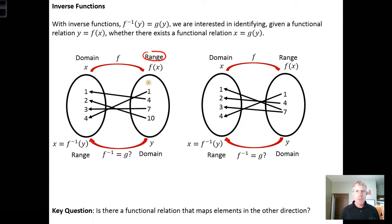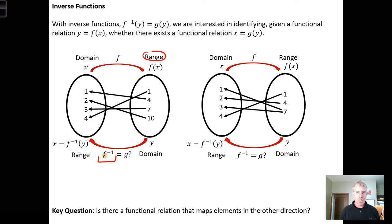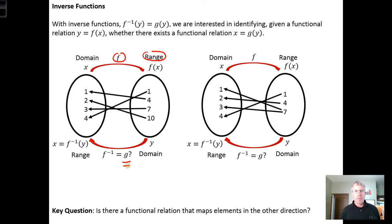We look at the old range and take its elements — if they map back in the other direction to exactly one element in the original domain, then we have a function. We call that function the inverse function, and we represent it using this notation: F inverse. I can give it a name just like the original function was named F — I'll call the inverse function G. So in this case, there is a function G that maps the old range back to the original domain, and the range of the original function F is the domain of the inverse function G.